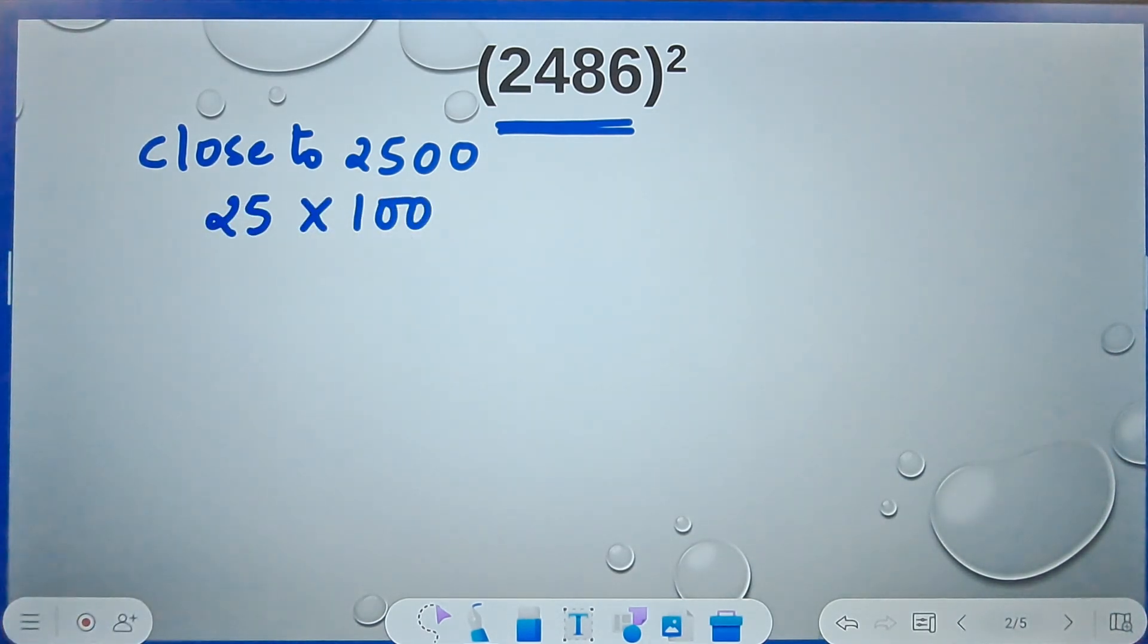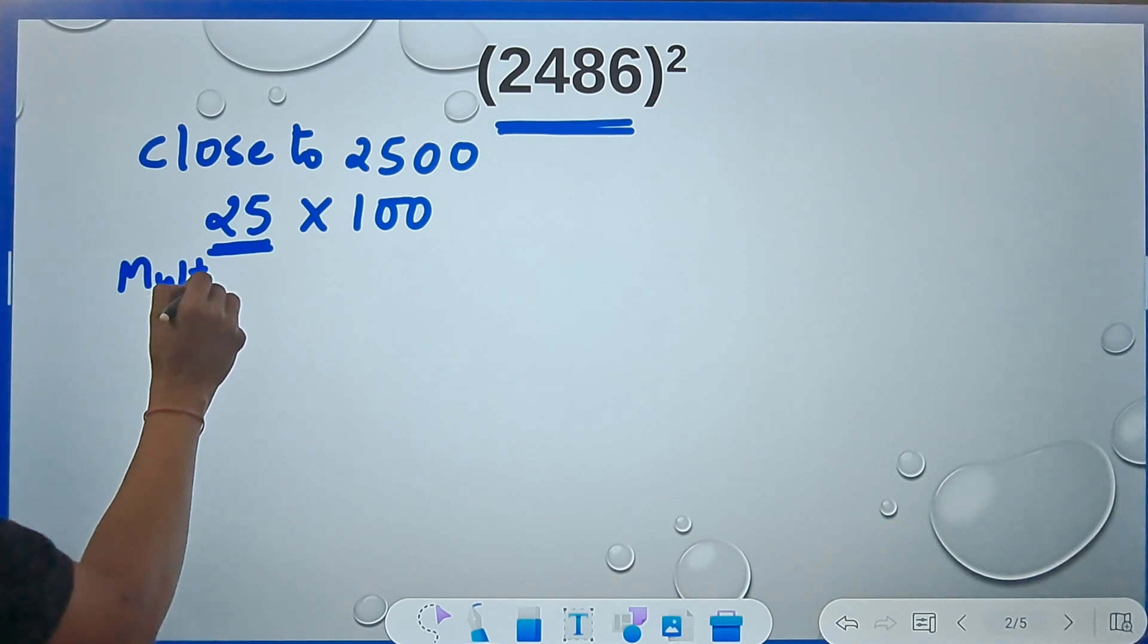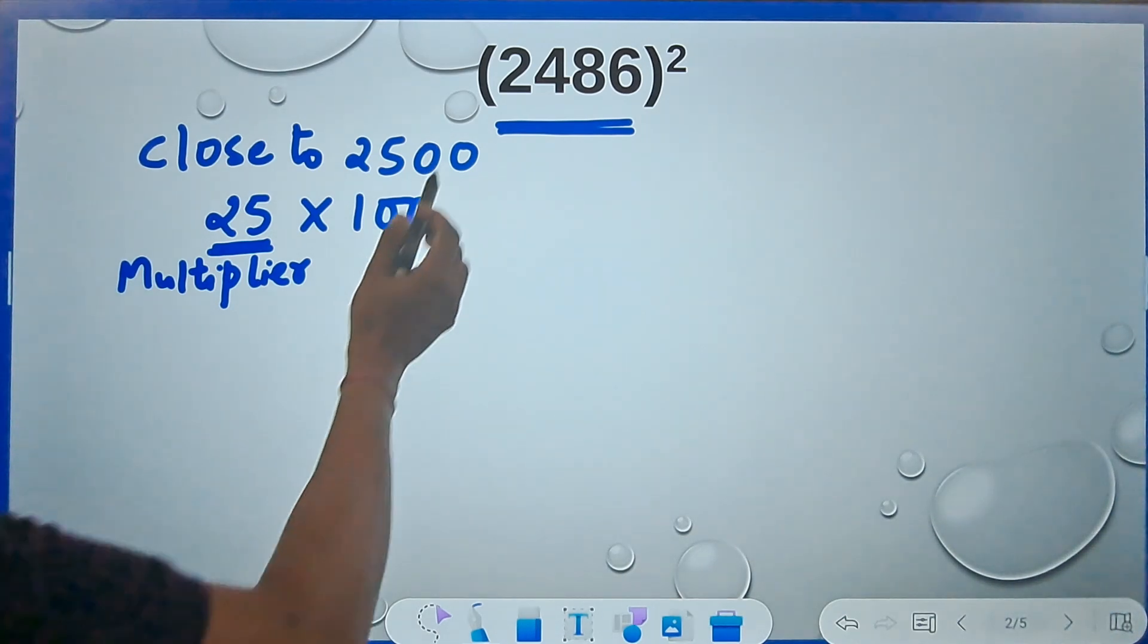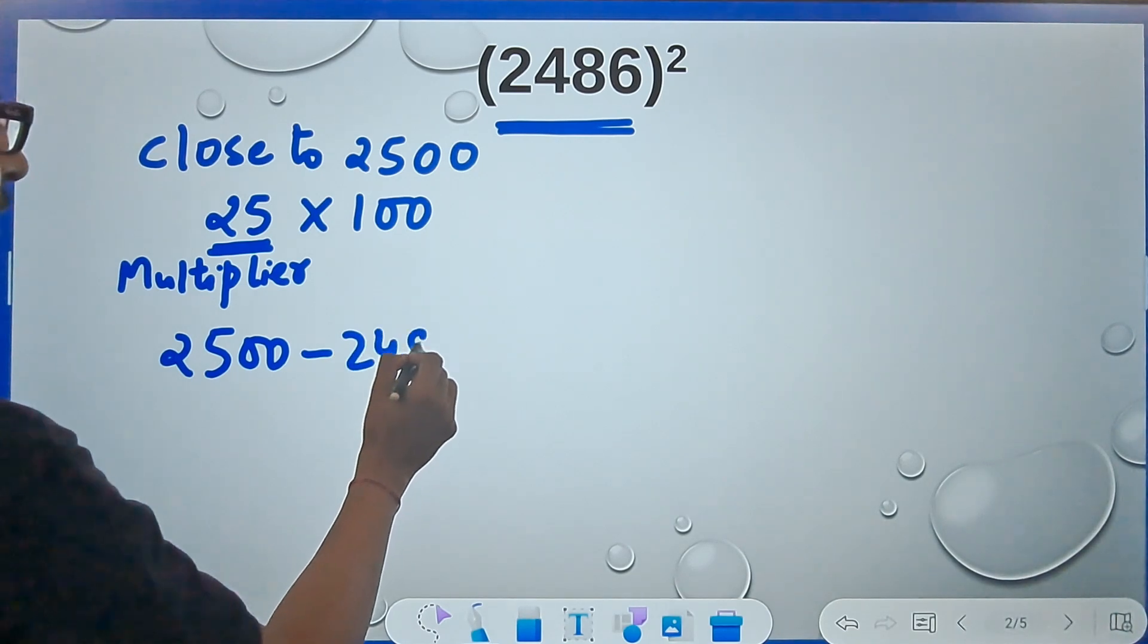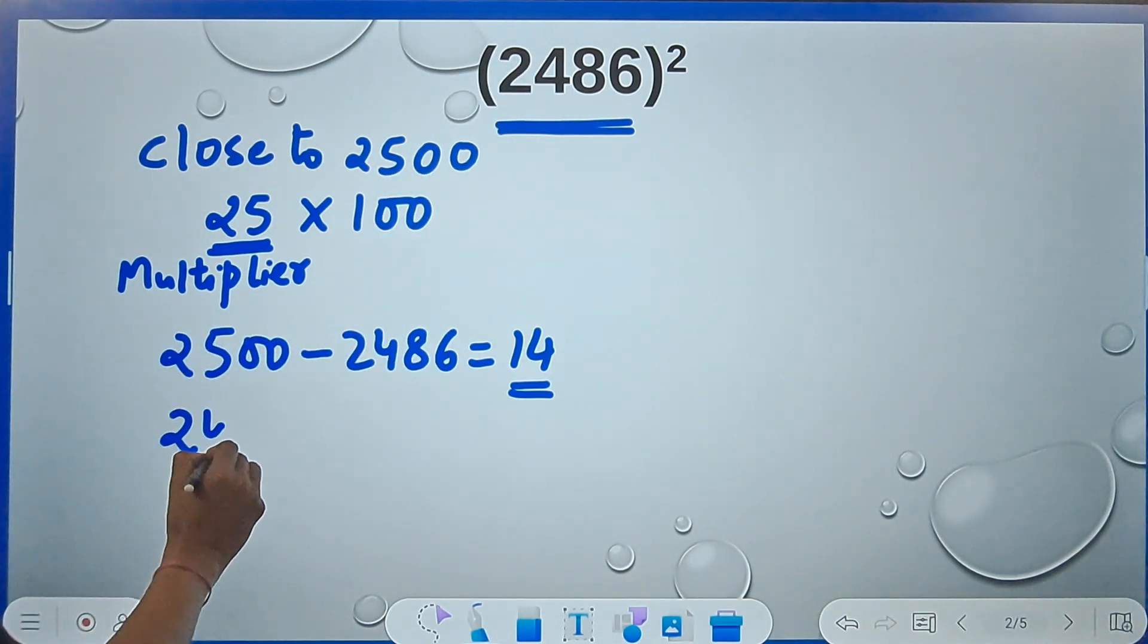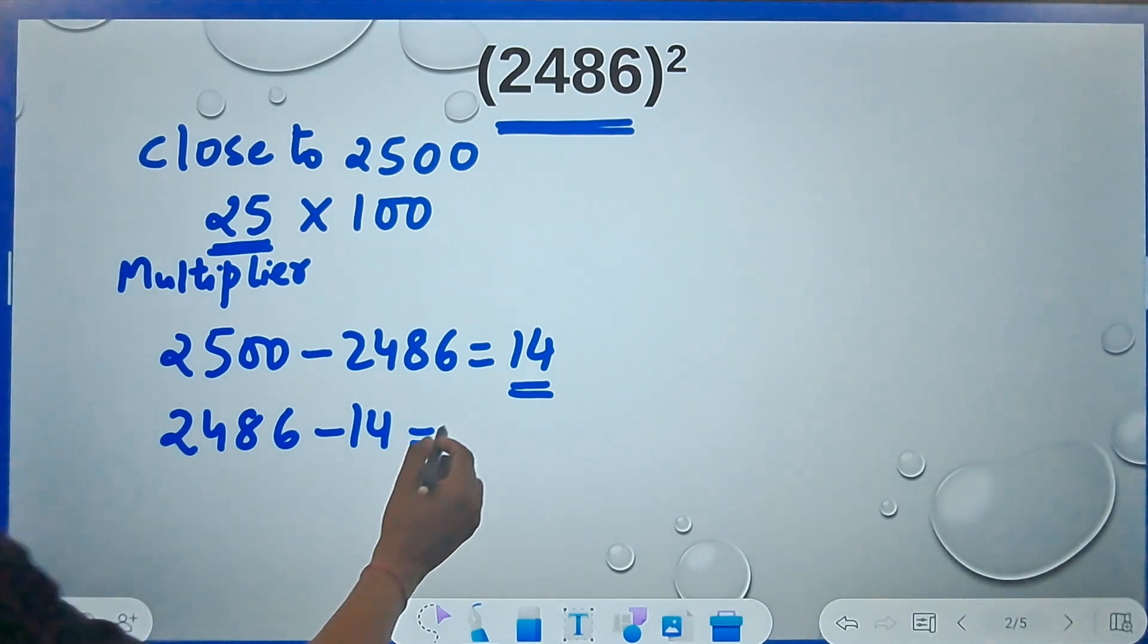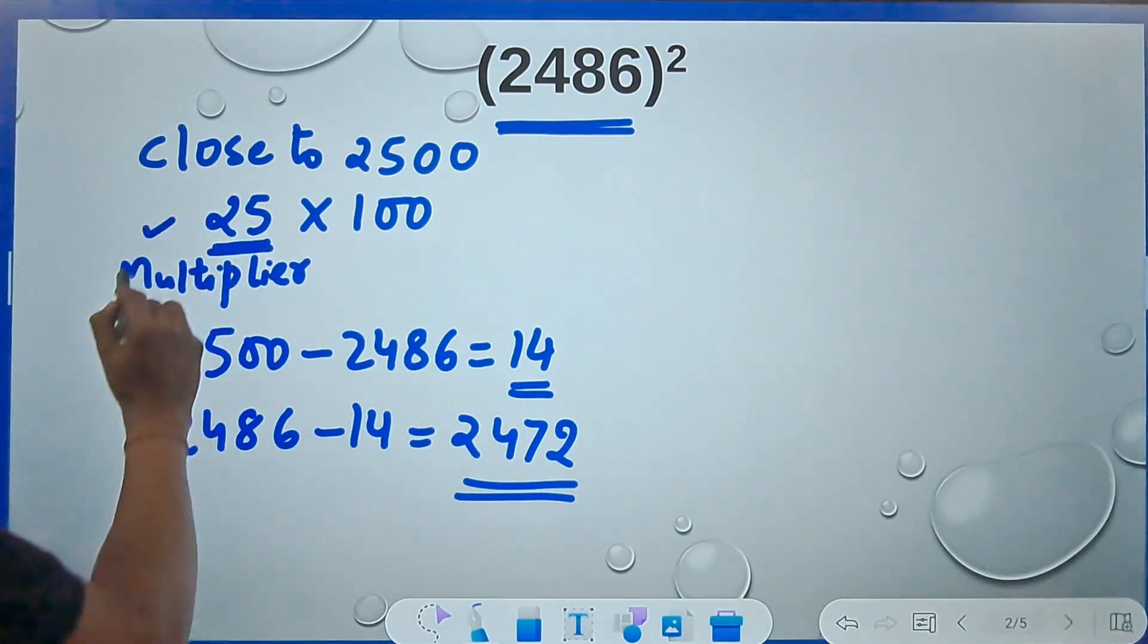I require this 25, this 25 will become my multiplier. There are 2500, so 25 becomes the multiplier. This number 2486 is how much less than 2500? If you subtract this you are going to get 14. So I am going to subtract 14 from this number, that means 2486 minus 14. This is 2472 and now this number will be multiplied by the multiplier 25.